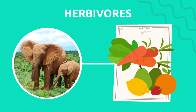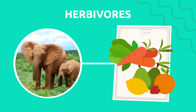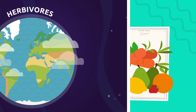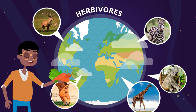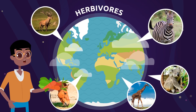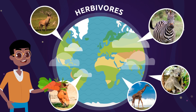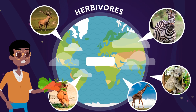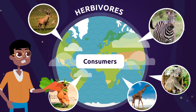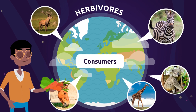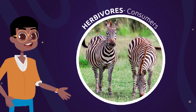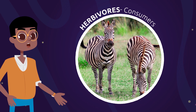Tigers, lions, and cheetahs are carnivore animals and also predators. Look at this lion — it's chasing a zebra! Herbivores mainly eat all kinds of plants, like vegetables or fruit. These animals don't feed on other animals; they only eat plants. That's why we call them consumers.